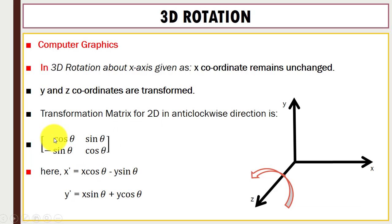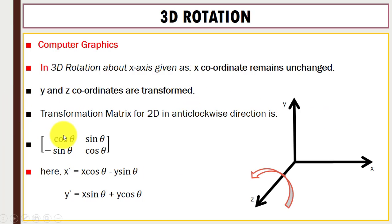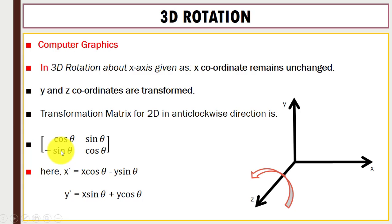In the 2D rotation matrix, we have x1, x2, y1, y2. The new point x-dash is computed as x·cos(θ) − y·sin(θ), and y-dash is computed as x·sin(θ) + y·cos(θ).